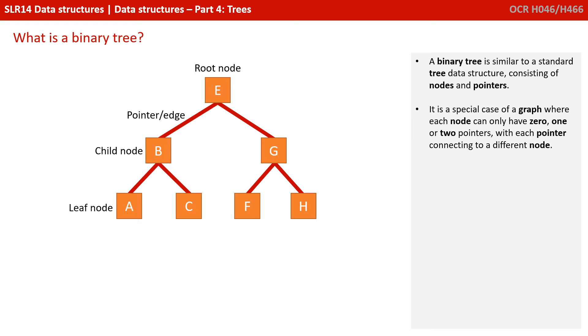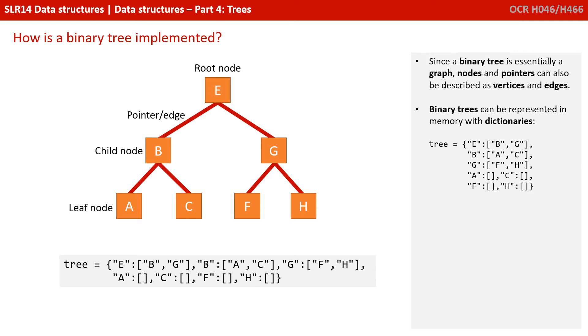A binary tree is similar to a standard tree data structure consisting again of nodes and pointers. It's a special case of a graph where each node can only have zero, one or two pointers, with each pointer connecting to a different node. Since a binary tree is essentially a graph, nodes and pointers can also be described as vertices and edges.